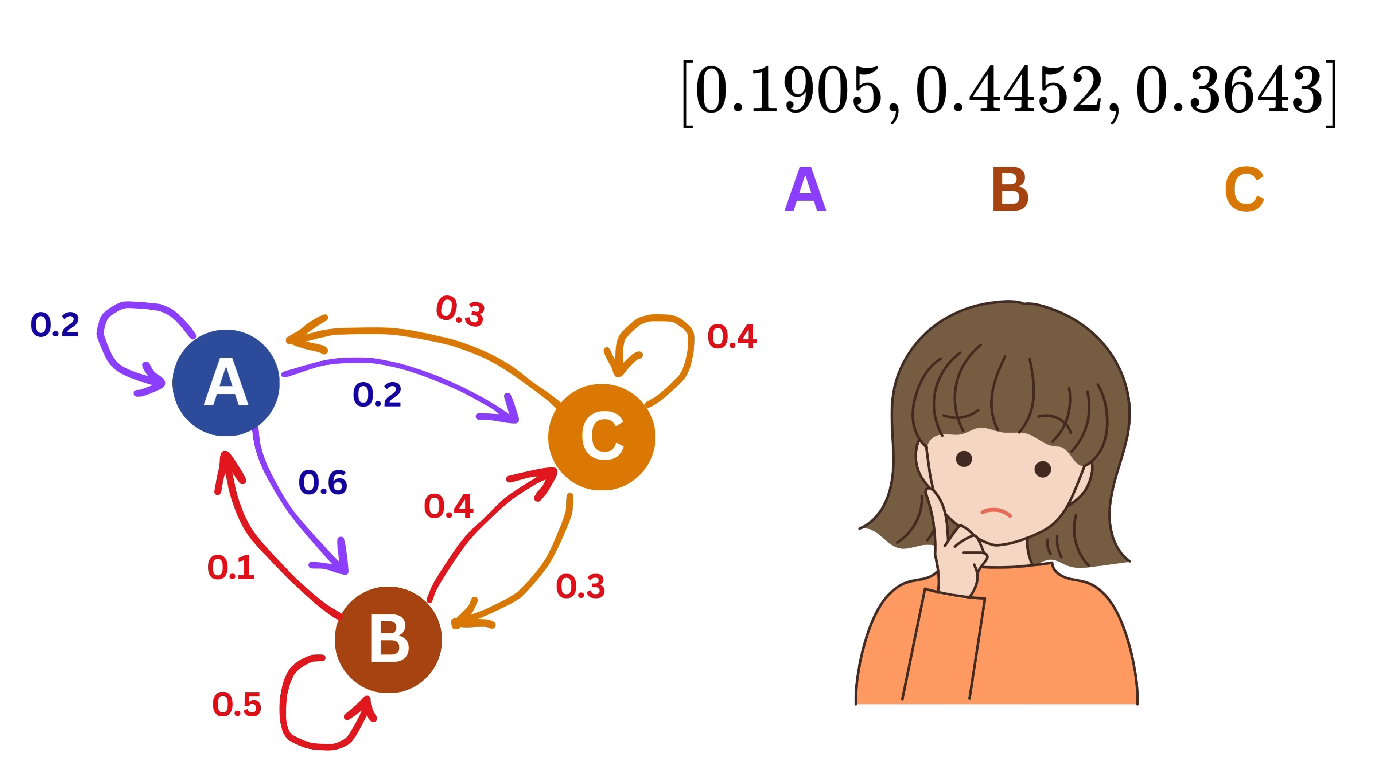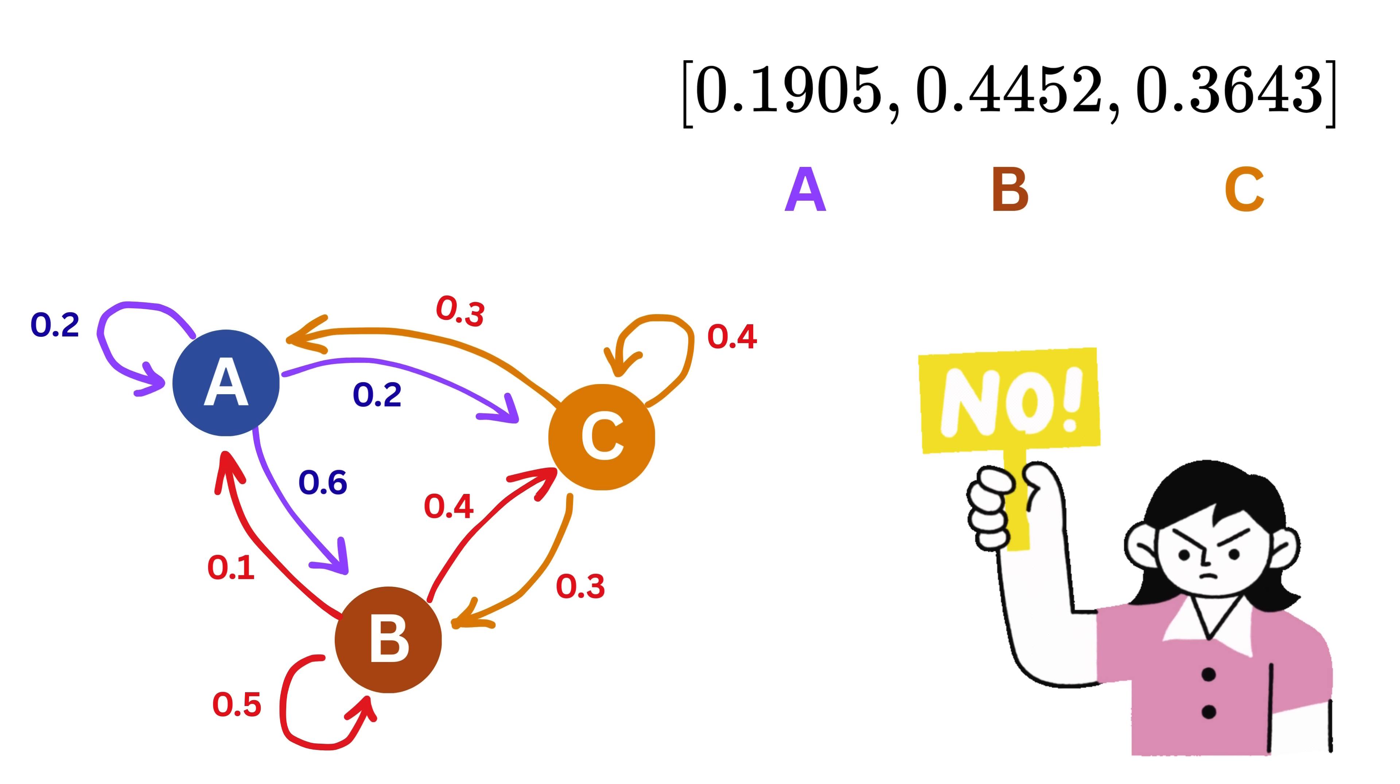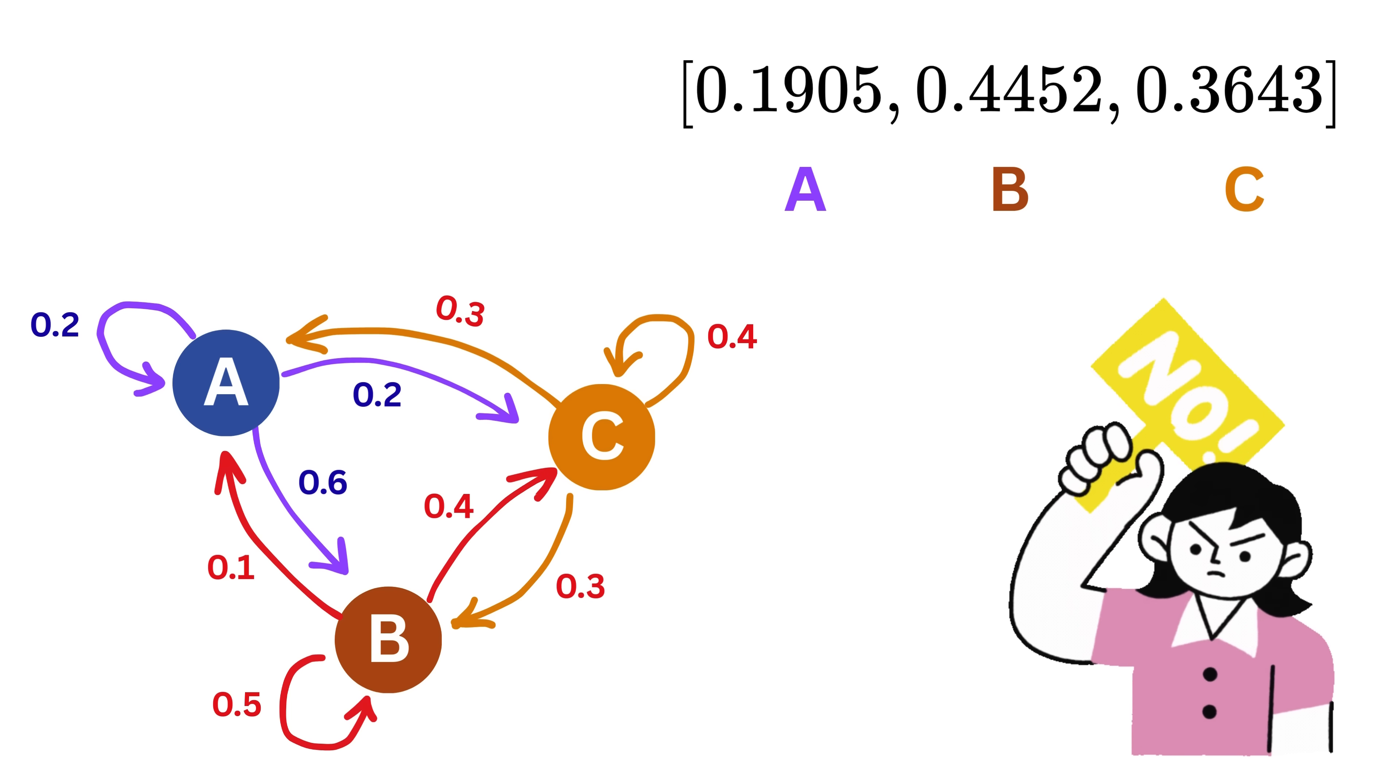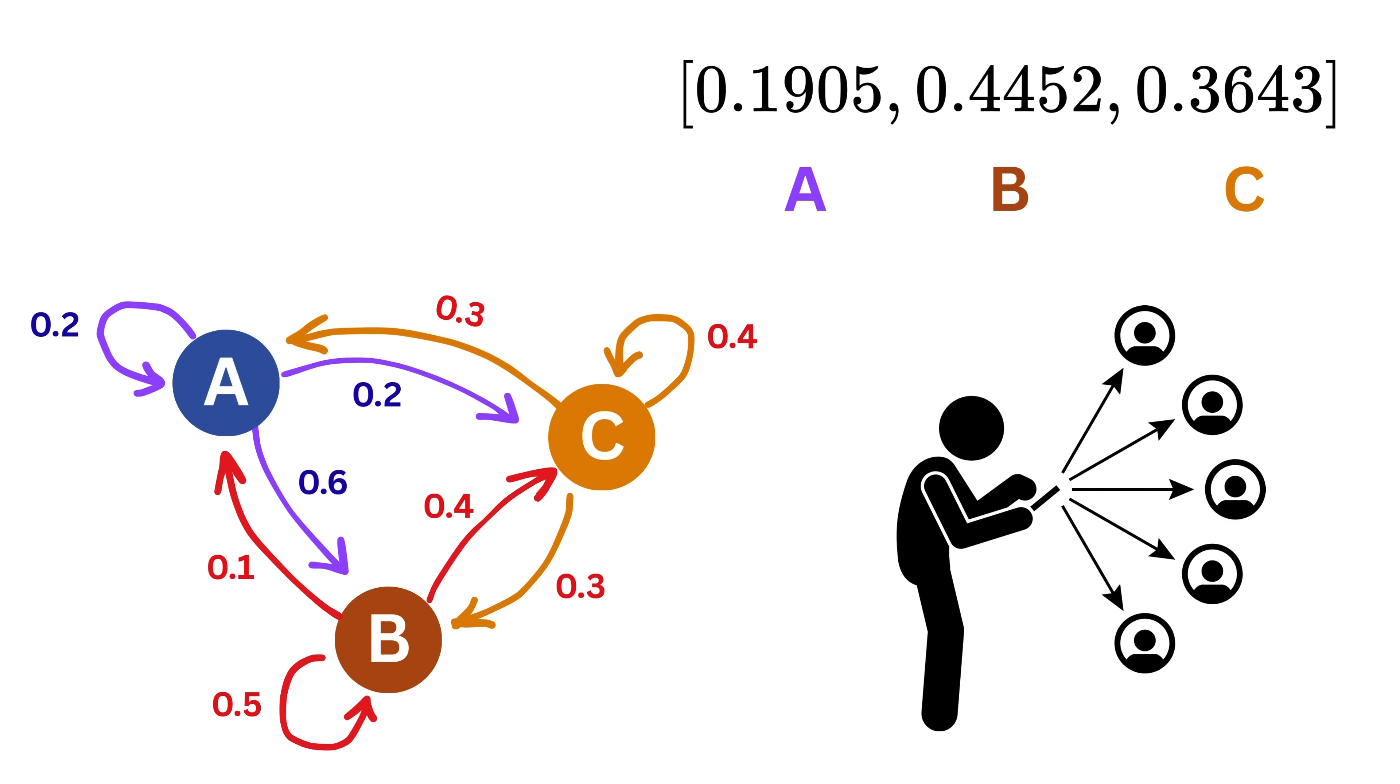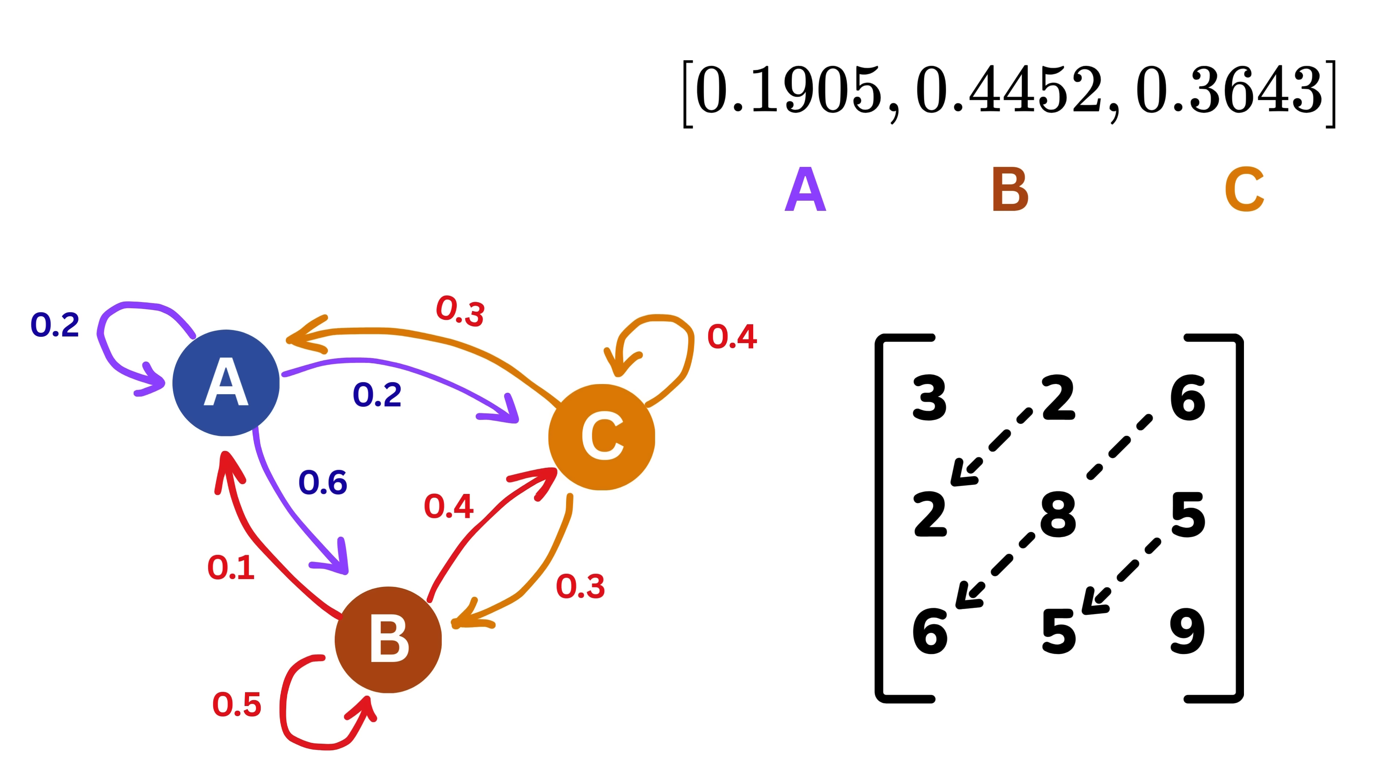Just because our simulation converged to one set of probabilities doesn't automatically mean that's the only stationary state. In theory, a Markov chain could have no stationary state where the probabilities never stabilize. They keep changing values forever or multiple stationary states, which means we can have two or more different stable distributions that are possible depending on where you start. This is where linear algebra gives us a smarter and faster solution.